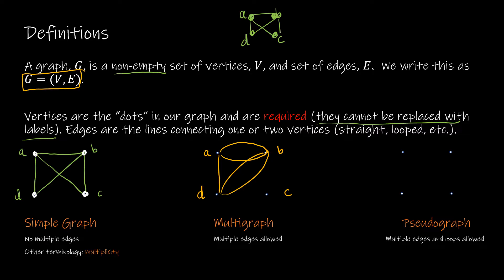A pseudograph can have multiple edges and can also connect an edge to itself. This would be an example of a pseudograph with multiple edges and loops. When we talk about multiplicity, we mean how many edges are between two sets of vertices. A and B with two edges have a multiplicity of two.